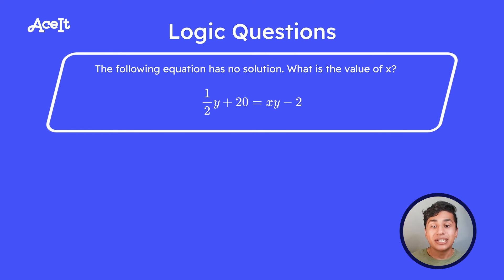We know that the equation has no solution and we're given that 1 half y plus 20 is equal to x y minus 2. What is x? Now let's pause and think about this for a second. The question only has one answer and x has to be something that would result in the equation having no solution.